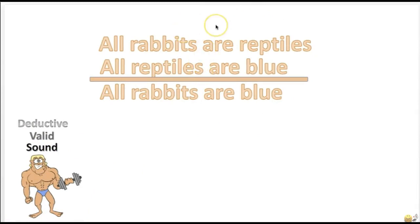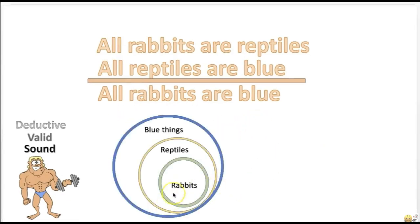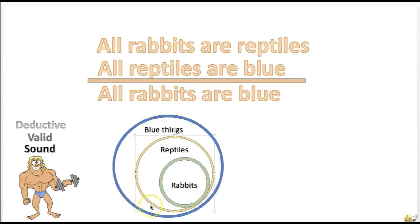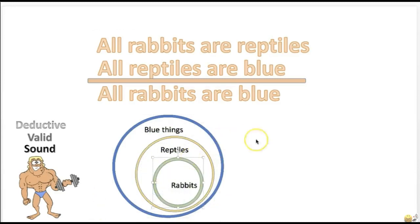Here's another example of a valid argument. In this argument the premises are not true, but they do support the conclusion. If we assume that the premises are true, then it's impossible for the conclusion to be false. The argument: 'All rabbits are reptiles. All reptiles are blue. Therefore, all rabbits are blue.' If all rabbits are reptiles and all reptiles are in a group of blue things, then all rabbits are also in the group of blue things. You can draw circles to visualize this — it's a good technique.